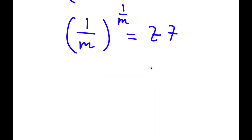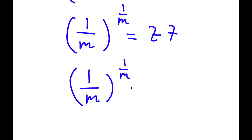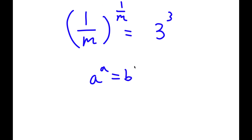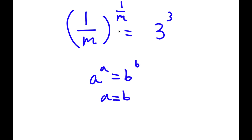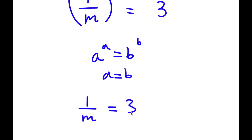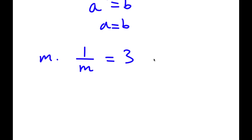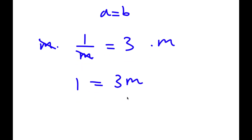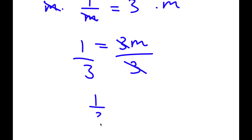So now I have 1 over m to the power of 1 over m is equal to 27. Now 27 is the same thing as 3 to the power of 3. So 1 over m to the power of 1 over m equals 3 to the power of 3. Since a to the a equals b to the b implies a equals b, we get 1 over m equals 3. Multiplying both sides by m gives 1 equals 3m, and dividing both sides by 3 gives m equals 1 over 3.